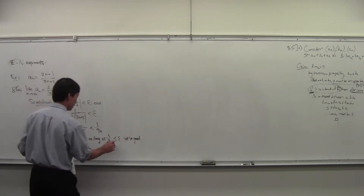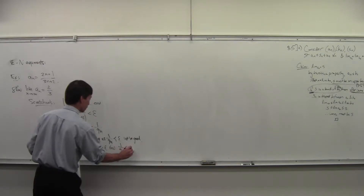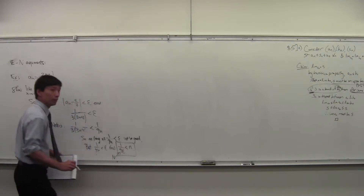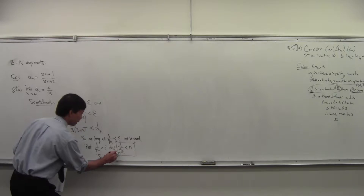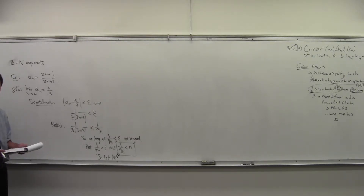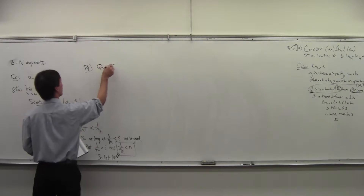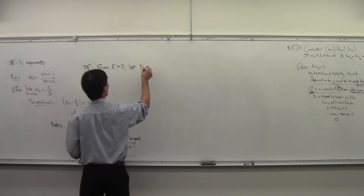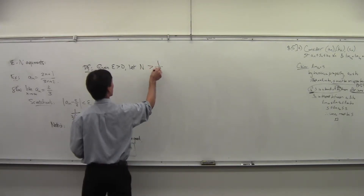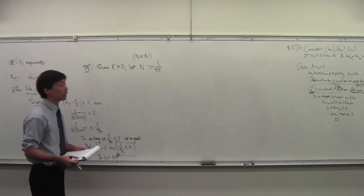We said 1/(9n) < ε is the same thing as saying n must be greater than 1/(9ε). That gives us our capital N. So let N exceed 1/(9ε) — remember, capital N is some natural number, so just choose any natural number that exceeds 1/(9ε).